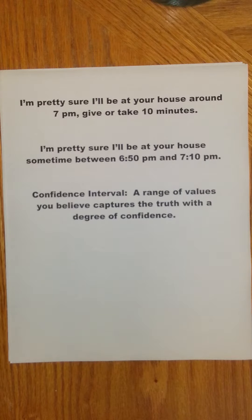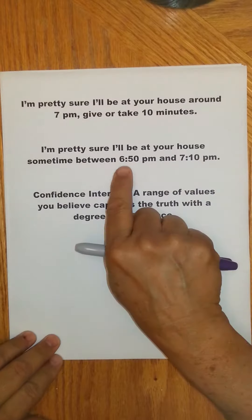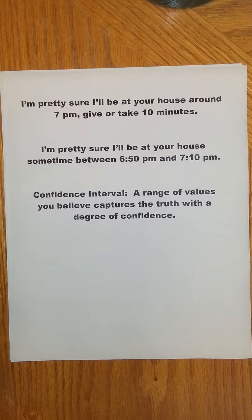Let's suppose somebody says to you, I'm pretty sure I'll be at your house around 7 o'clock, give or take 10 minutes. So what that really means is when you add and subtract 10 minutes from 7 o'clock, you're pretty sure you're going to be at somebody's house between 6:50 and 7:10. This interval, 6:50 to 7:10, is a confidence interval. What is a confidence interval? It's a range of values you believe captures the truth with a certain degree of confidence.